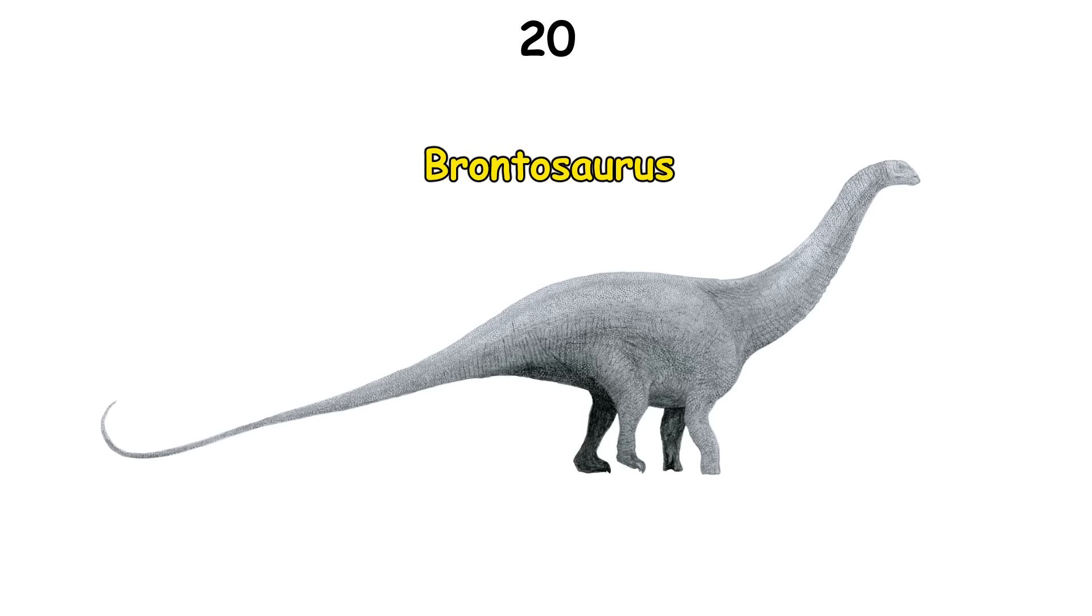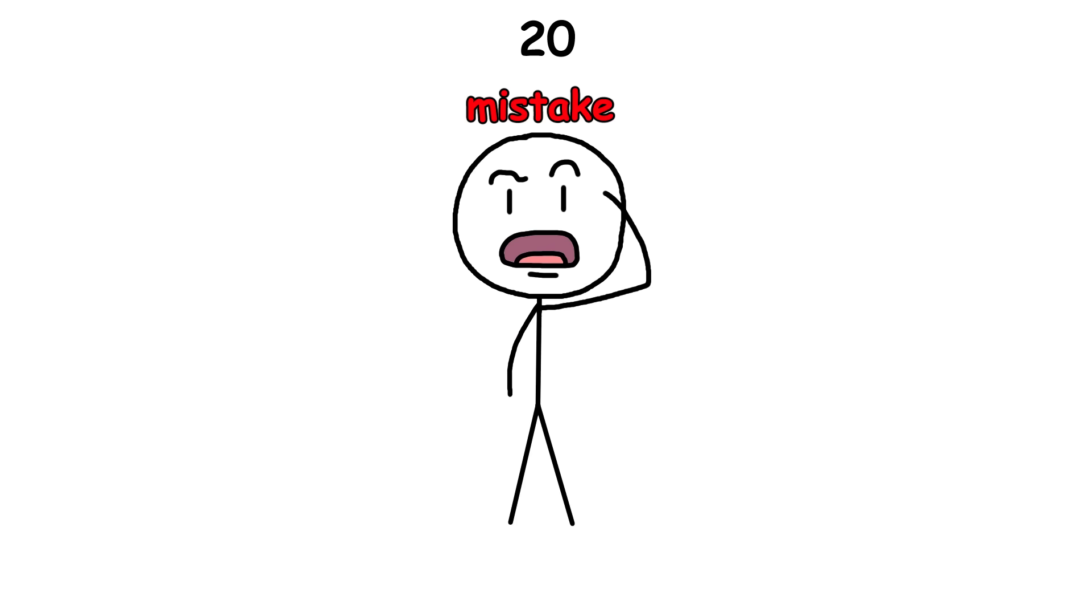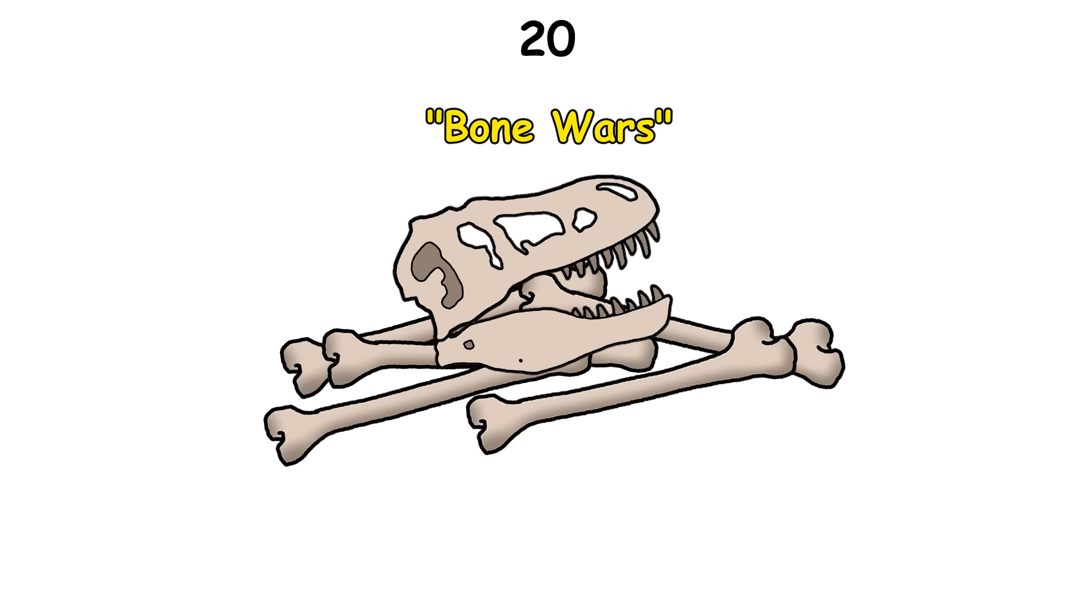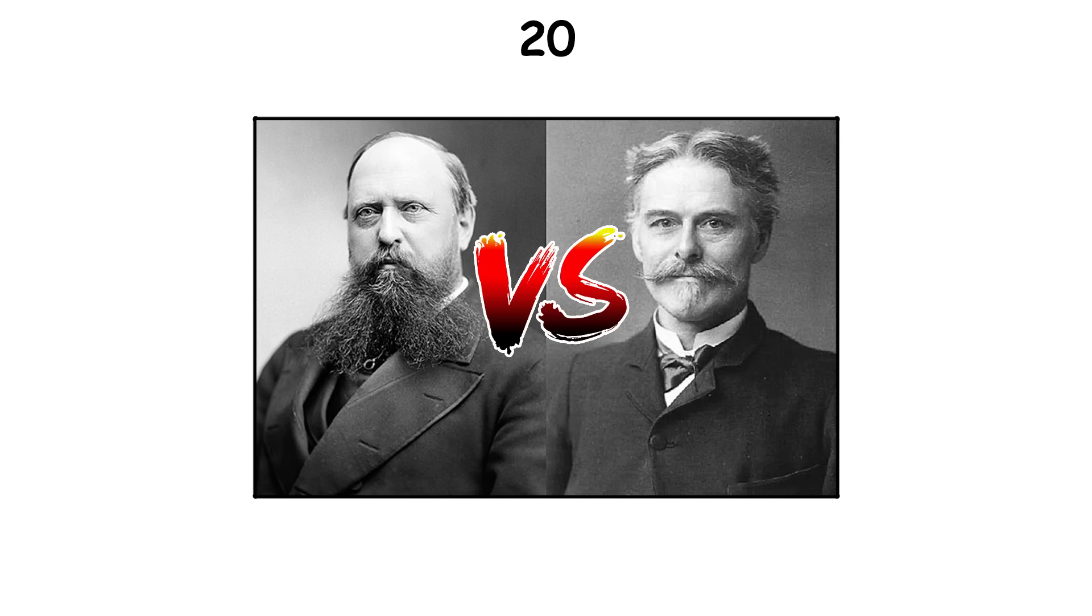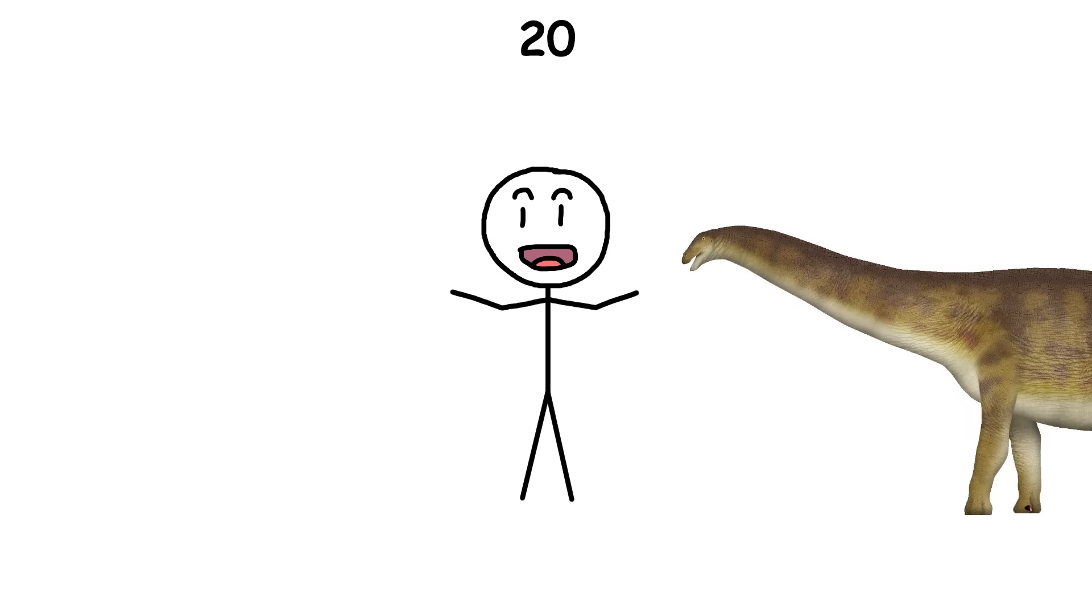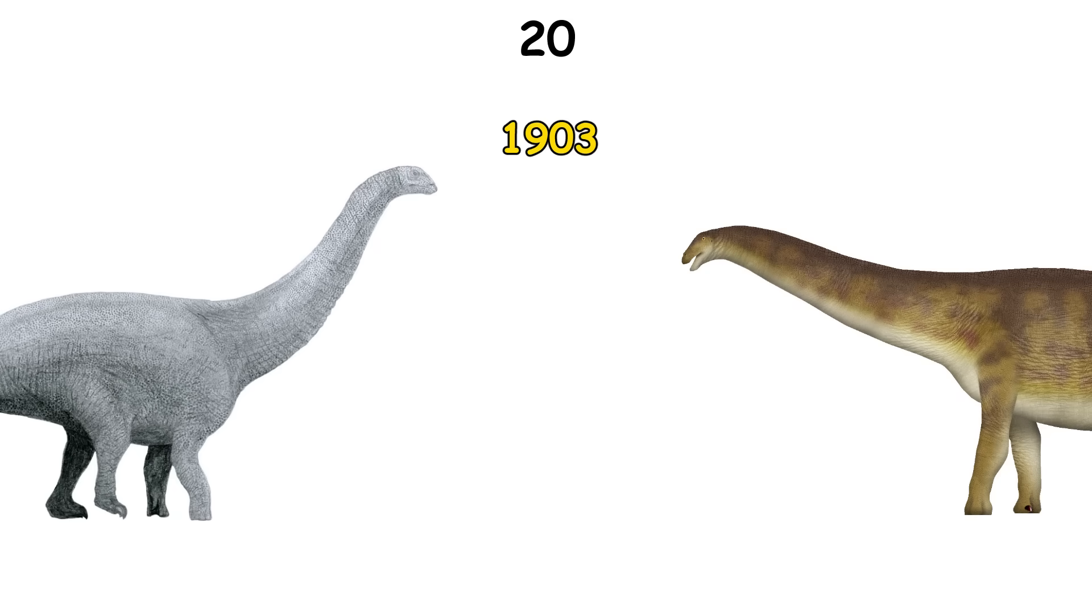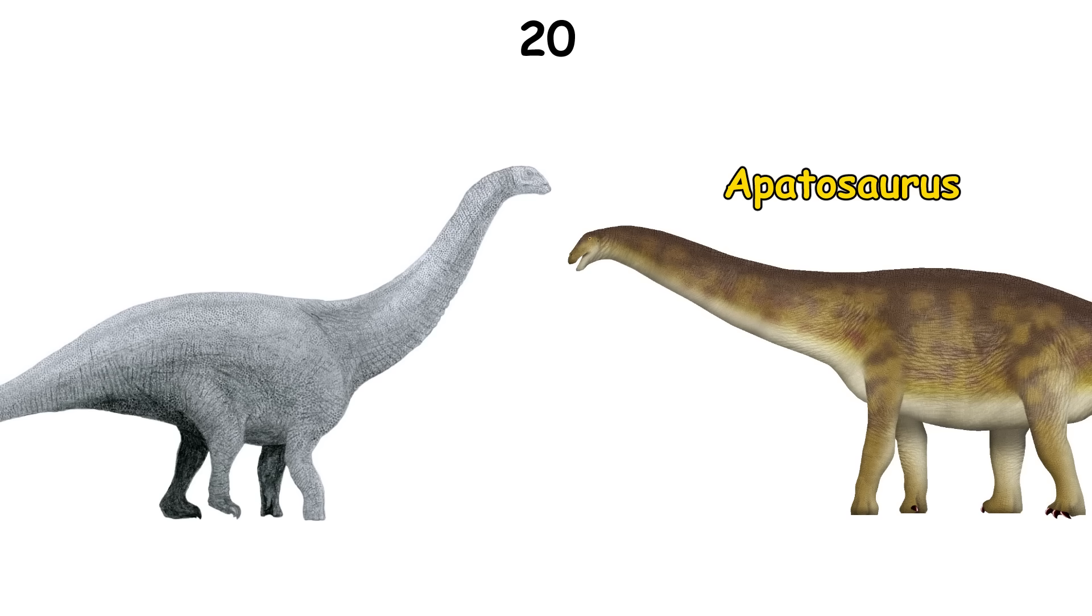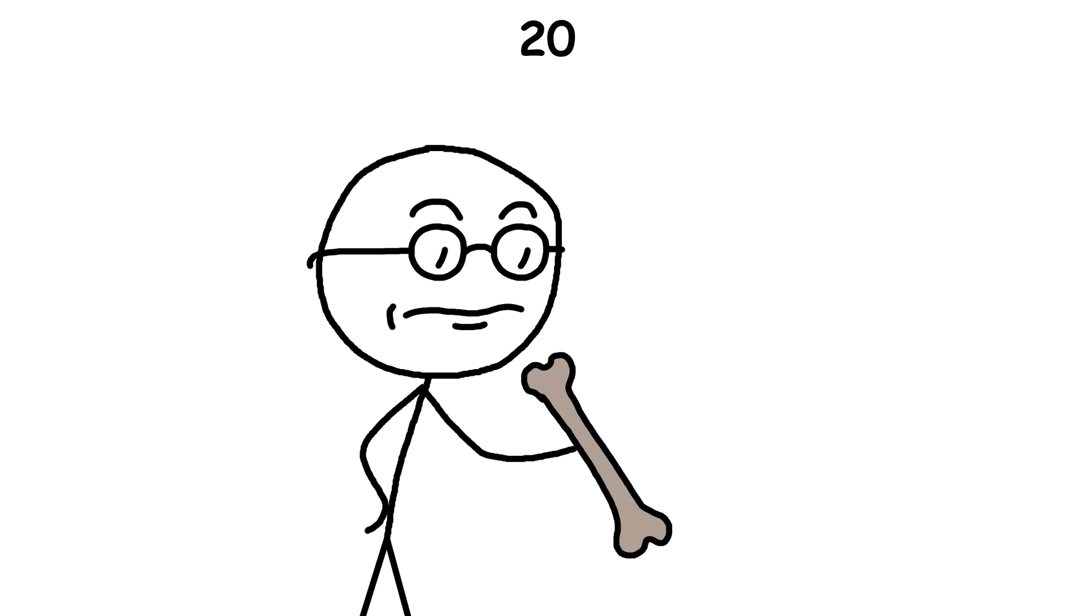You may have heard that Brontosaurus never existed, but that was based on a mistake made during the Bone Wars of the 1800s, when two rival scientists rushed to name dinosaurs. One named both Apatosaurus and Brontosaurus, but in 1903, scientists decided they were the same dinosaur. Because Apatosaurus was named first, Brontosaurus was dropped, but in 2015, after a deep study of over 80 specimens and hundreds of traits, scientists found Brontosaurus was different enough to deserve its own name.